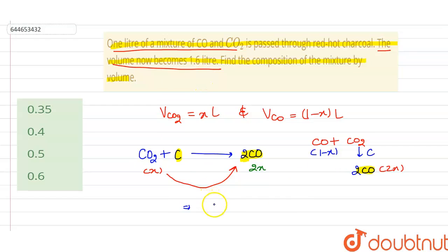And initially the volume of CO is, we have let us, 1 minus x liter. So here the total volume becomes 1.6, so we can write it as 1 minus x liter from the initial CO and 2x from the CO2 gets converted into the CO by passing through the red hot charcoal.